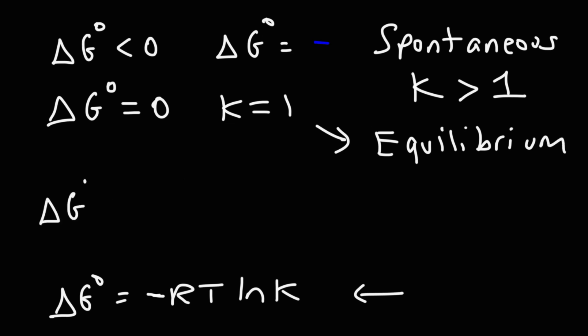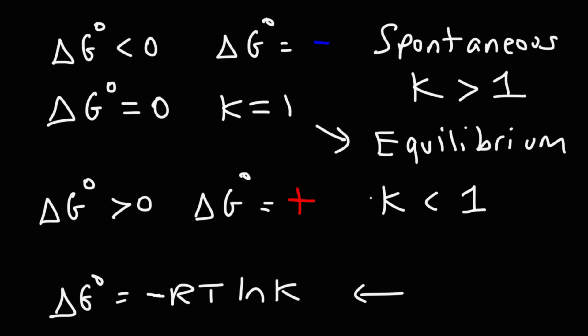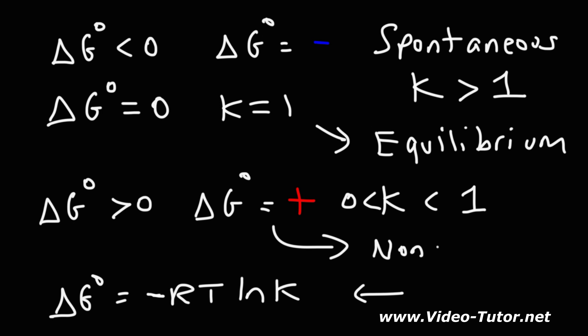When the standard free energy change is greater than zero — meaning it's positive — K is less than 1. K is never negative, so when K is less than 1, it's between 0 and 1. When delta G is positive, or when K is very small, you have a non-spontaneous reaction in the forward direction, which means it's spontaneous in the reverse direction. The reaction is reactant-favored, meaning it will prefer to go to the left rather than the right.